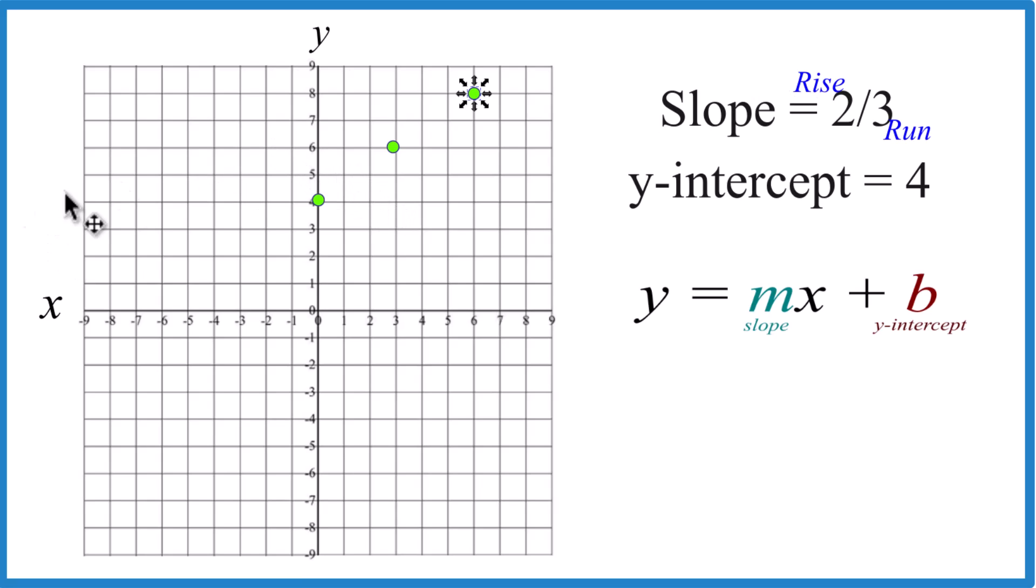We can even go in the opposite direction. We could go down one, two, and to the left, one, two, three. Down two, to the left, one, two, three.